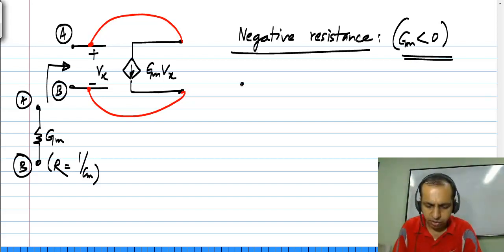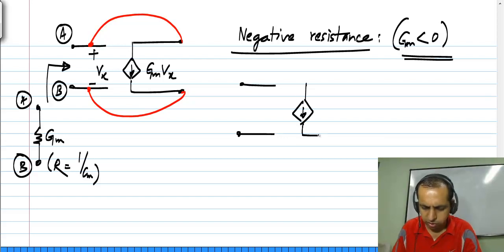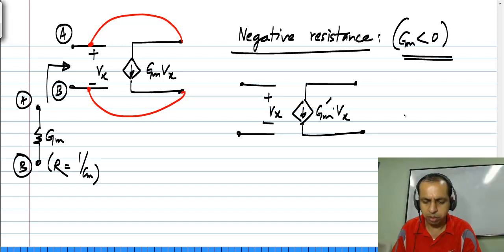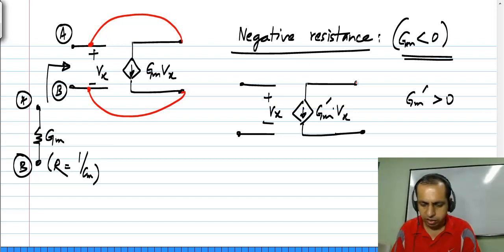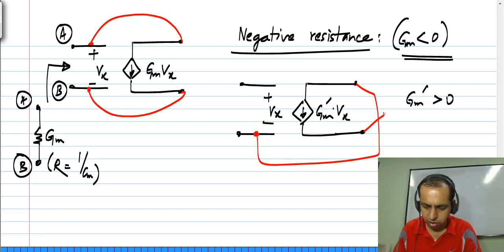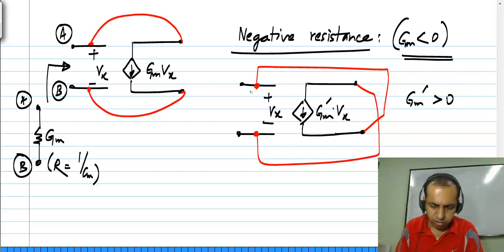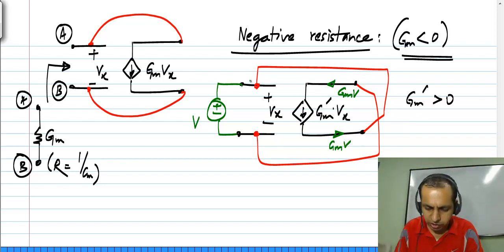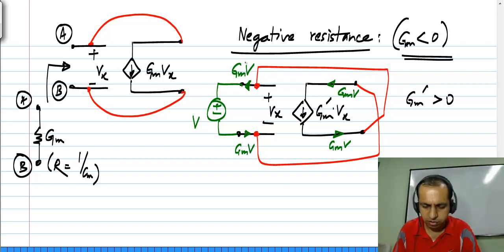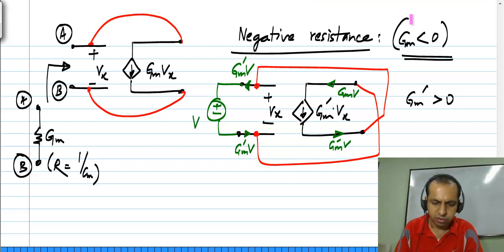Another way to think about it: let us say you had a controlled source Gm-prime times Vx, and Gm-prime happens to be more than 0. Still, we can realize a negative resistance — all we have to do is connect this here and this over there. Then if I connect a voltage source V, a current Gm times V will flow there, and tracing it around the circuit, where Gm-prime is a positive number, that corresponds to a negative resistance.